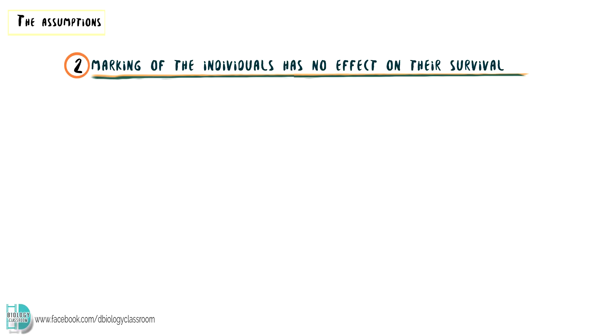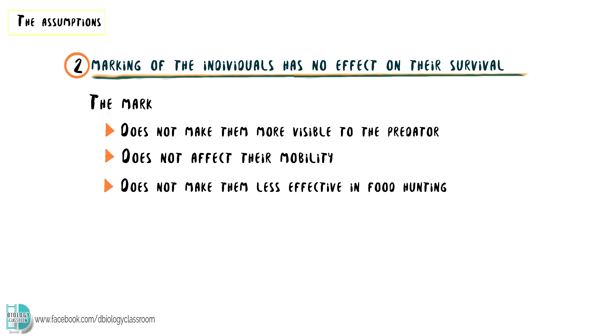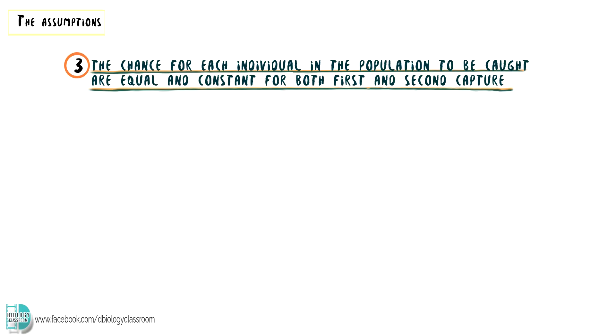The second assumption is that marking of the individuals has no effect on their survival. The mark does not make them more visible to predators. It does not affect their mobility. The mark does not make them less effective in food hunting as well.